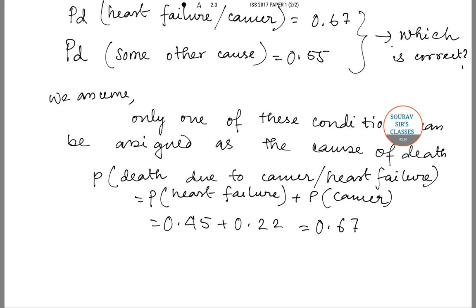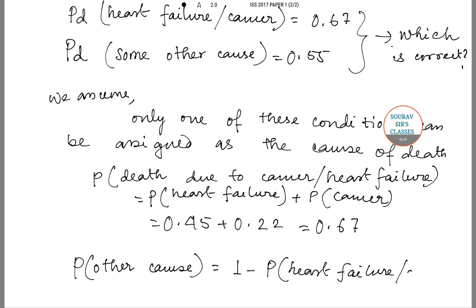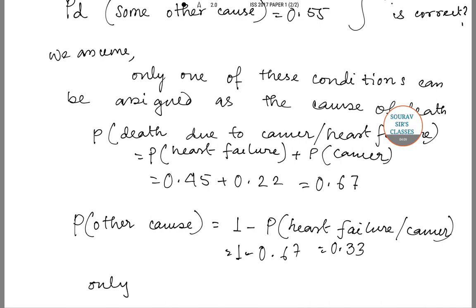The probability of other cause equals 1 minus the probability of heart failure or cancer, which equals 1 minus 0.67, giving us 0.33. Now checking the options — only one is correct, only two is correct, both one and two are correct, or neither. Since Statement 1 is correct but Statement 2 gives 0.55 instead of 0.33, our answer is option A: only one is correct.